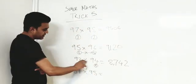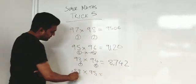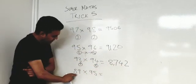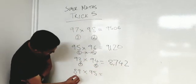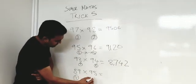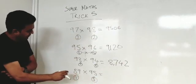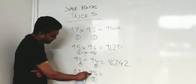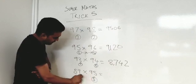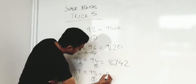So 93 times 94 is 8742. Look at this. How close is 89 to 100? 11 away. How close is 95 to 100? 5 away. Now if we take 11 from 95 or 5 from 89, we are left with 84.